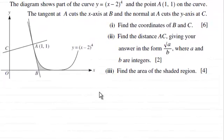Hi there. Now, in this second part, we're asked to find the distance AC, giving your answer in the form root A over B, where A and B are integers for two marks.